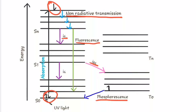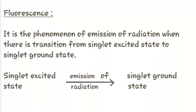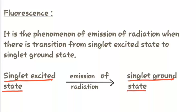This was all about the Jablonski diagram. Now let us have a look at the key terms included in the Jablonski diagram. The first is fluorescence — it is the phenomenon of emission of radiation when there is a transition from the singlet excited state to the singlet ground state. That is, when the transition occurs from the singlet excited state to the singlet ground state, there is an emission of radiation.